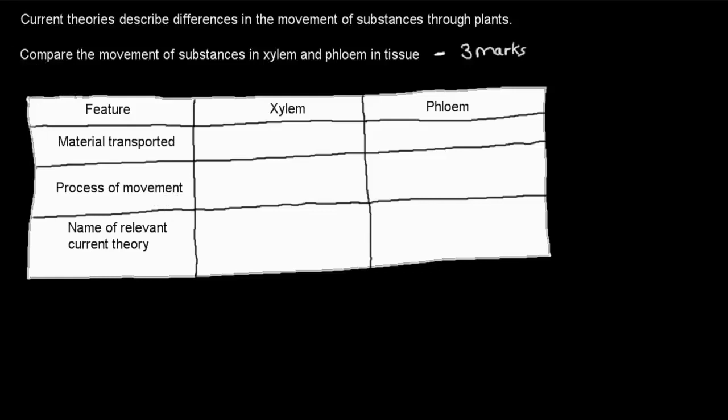So the question here is: current theories describe differences in the movement of substances through plants. Compare the movement of substances in xylem and phloem tissue—that is worth three marks.